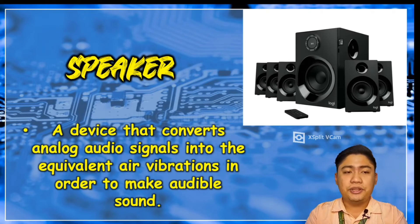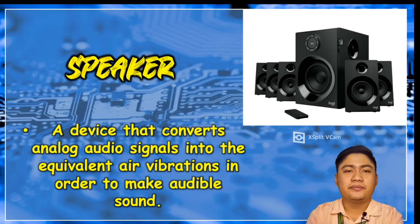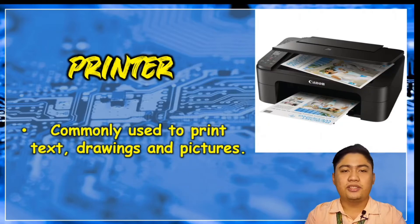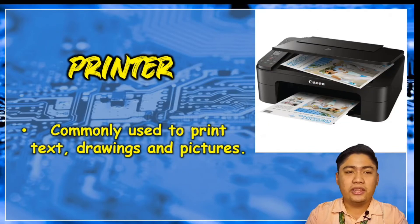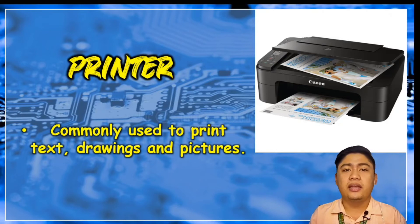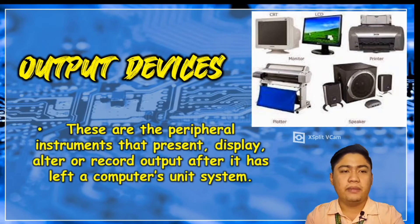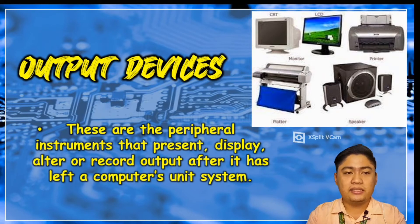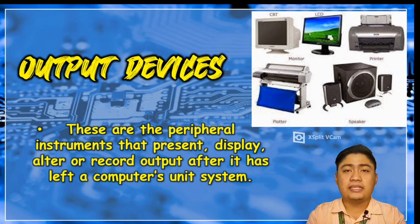The speaker is a device that converts analog audio signals into the equivalent air vibration in order to make audible sound. The printer is commonly used to print text, drawings, and pictures. Unlike the scanner, the printer converts your soft copy to a hard copy. Those are the different basic output devices.